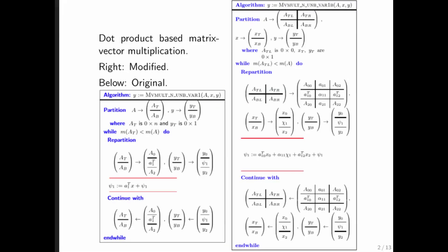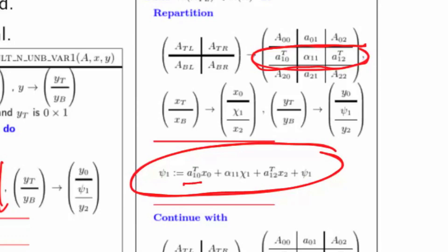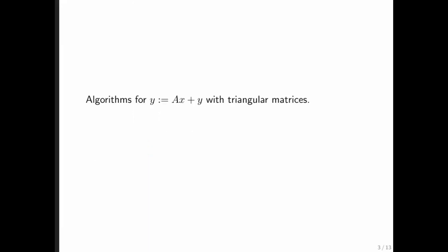On the left, we had the algorithm for matrix vector multiplication that marched through the matrix by rows, which meant that we did dot products with rows in the vector x. On the right, we have the same algorithm, except that the row now is exposed as different pieces. As a result, we end up with two dot products, a scalar multiplication added to the current element of y.